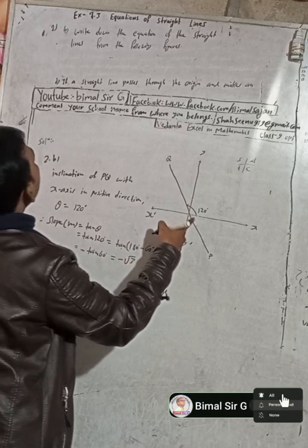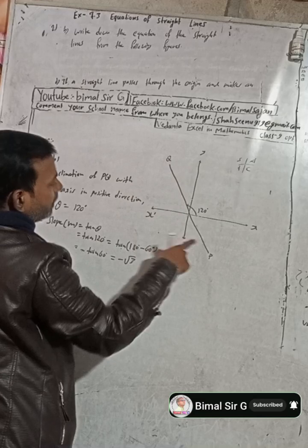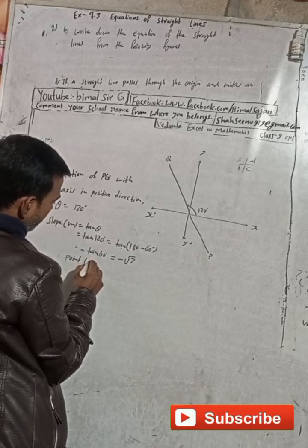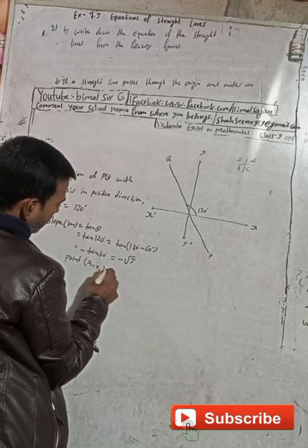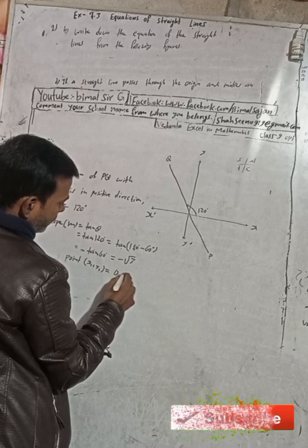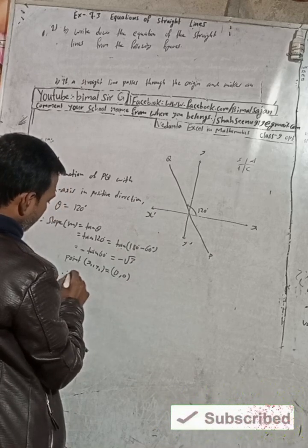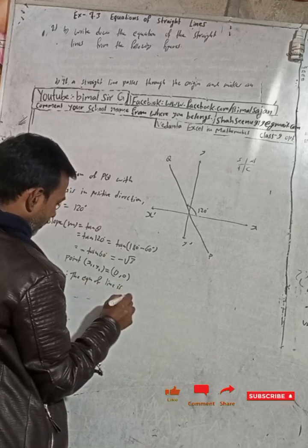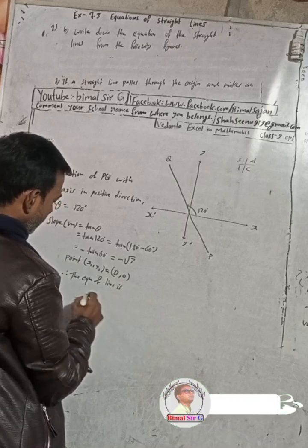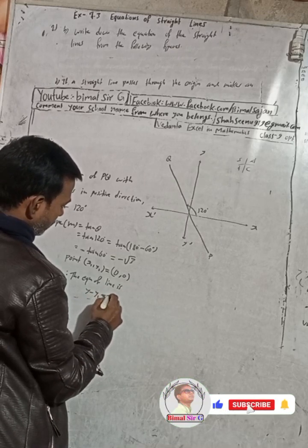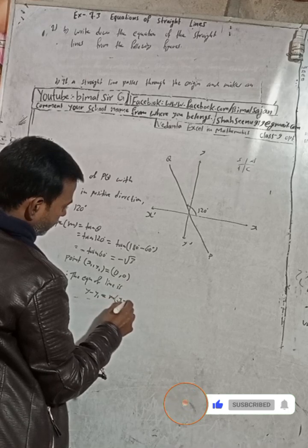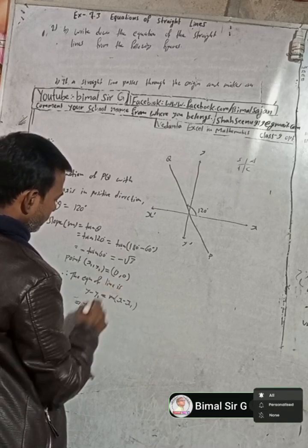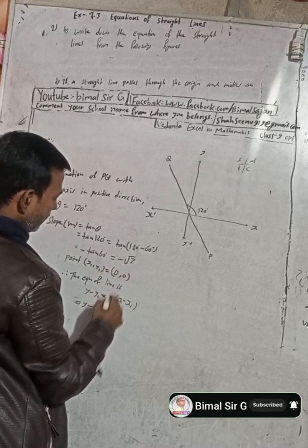Also, this line is passing through the origin, so the point (x1, y1) = (0, 0). Therefore the equation of the line is Y minus Y1 = M(X minus X1). Here Y1 = 0, X1 = 0, and slope M = minus root 3.